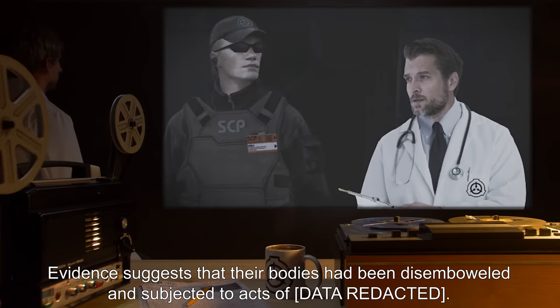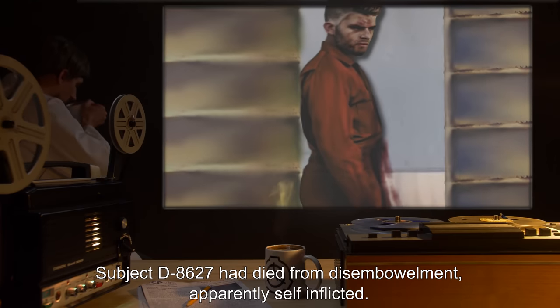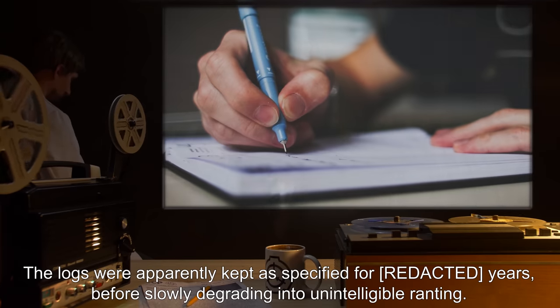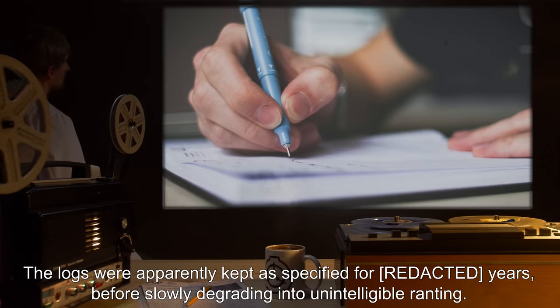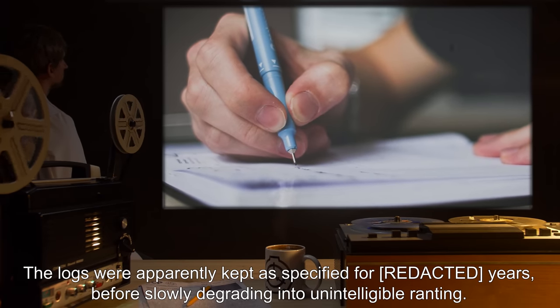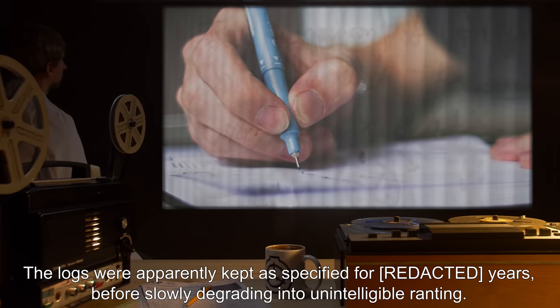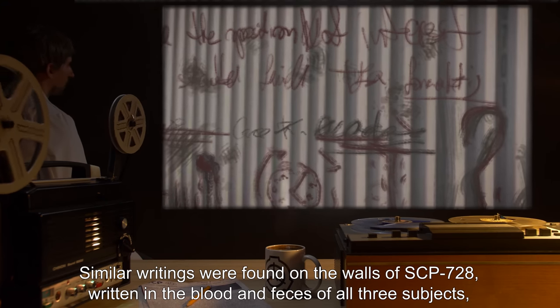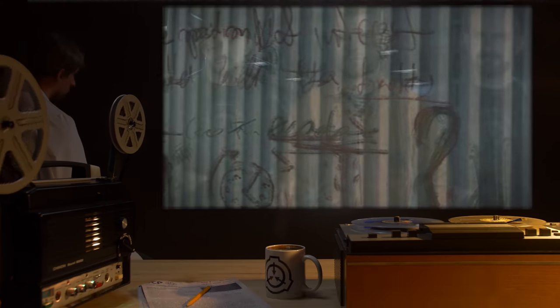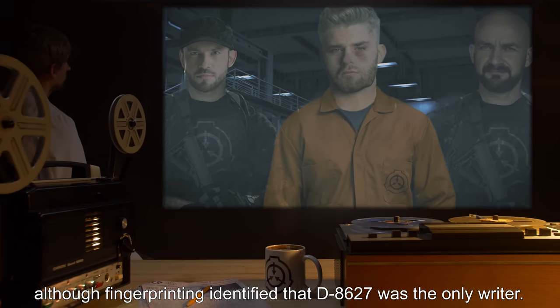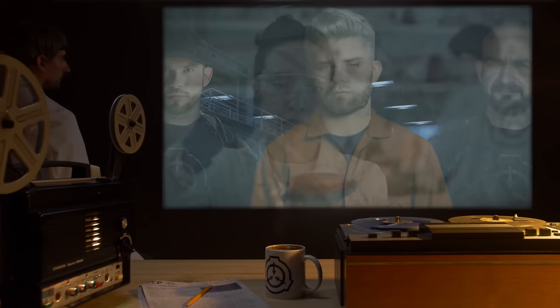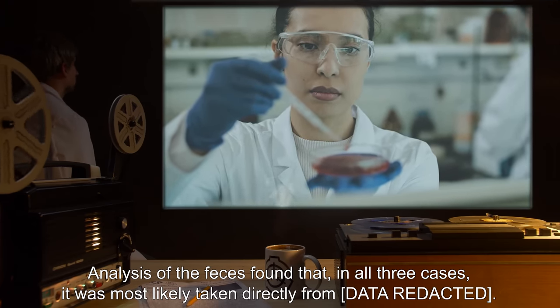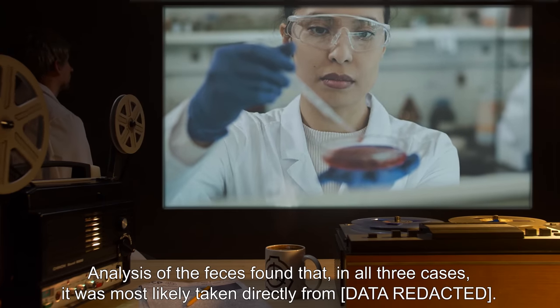Evidence suggests that their bodies had been disemboweled and subjected to acts of [REDACTED]. Subject D-8627 had died from disembowelment, apparently self-inflicted. The logs were apparently kept as specified for several years, before slowly degrading into unintelligible ranting. Similar writings were found on the walls of SCP-728, written in the blood and feces of all three subjects, although fingerprinting identified that D-8627 was the only writer. Analysis of the feces found that, in all three cases, it was most likely taken directly from the subjects' intestines.